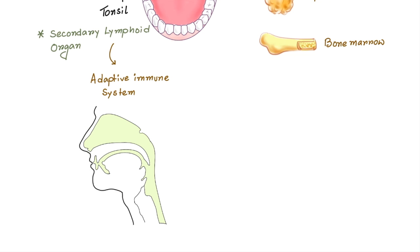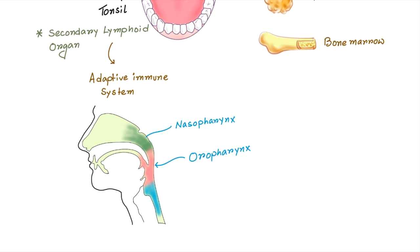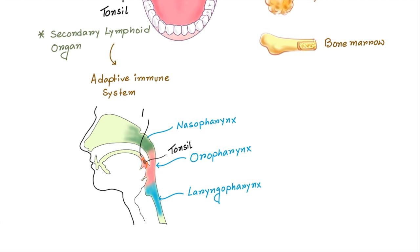Let's see the anatomic position of tonsils. Here in the sagittal section you can see there are three parts of pharynx. The uppermost part is nasopharynx, which is related to the nasal cavity. The middle part is oropharynx, which is related to the oral cavity. And the lowermost part is laryngopharynx. Palatal tonsils are present in the oropharynx between the anterior and posterior fascial pillars — you can see the anterior fascial pillar and the posterior fascial pillar here.